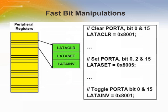In an embedded system, the ability to quickly manipulate I/O ports and bits is highly desired. The PIC32 architecture addresses this by providing a set of registers called Set, Clear, and Invert. For a majority of special function registers (SFRs), there are three additional registers. For example, the LATA SFR is followed by LATA_CLR, LATA_SET, and LATA_INV. To clear a group of bits in the LATA register, you write the corresponding mask values into the LATA_CLR register. For example, a write of 0x8001 to LATA_CLR would clear bits 0 and 15. Similarly, a write to the SET register sets the corresponding bits and a write to INV toggles the bits.